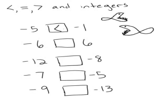I look at negative 6 and positive 6. A positive number is always going to be bigger than a negative number, so I'm going to point it that direction. Then I have negative 12 and negative 8. Negative 12 is farther away from 0 than negative 8, so negative 8 must be bigger.